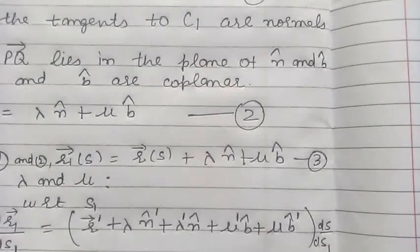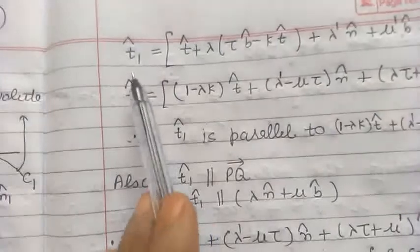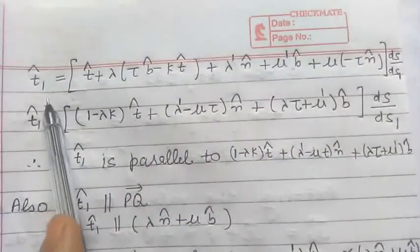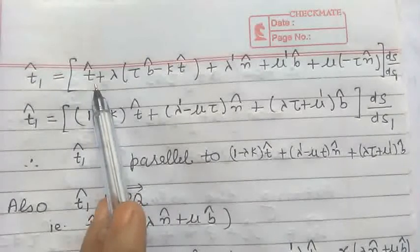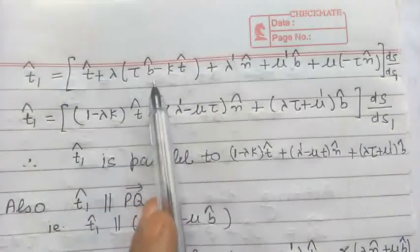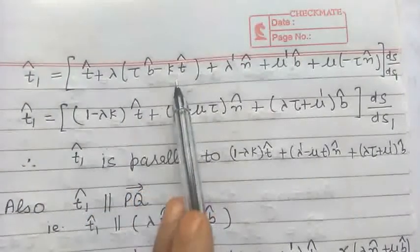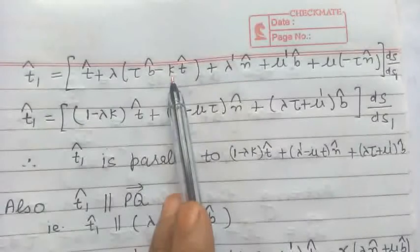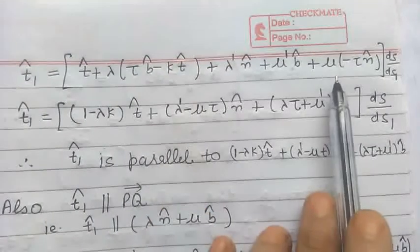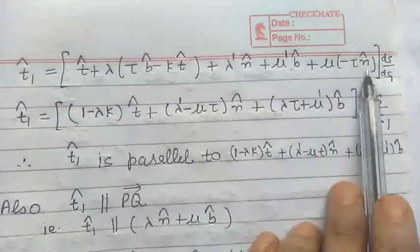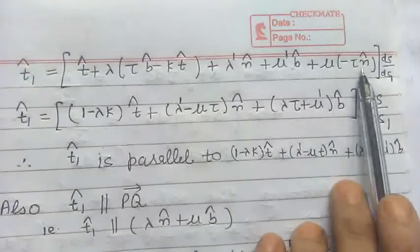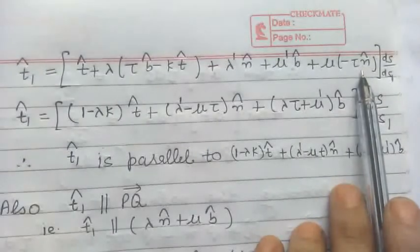Now by definition, dR1/dS1 is the vector T1 cap, and R dash is T cap. The derivative of N cap is τ B cap minus K T cap, and the derivative of B cap is minus τ into N cap, which are given by the Serret-Frenet formulas.